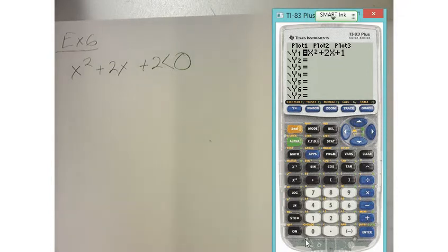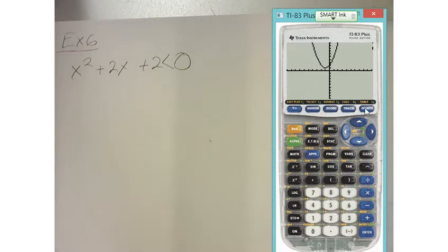And so here is a scenario when we graph this. Uh-oh, SpaghettiOs. What happens? It doesn't cross the x-axis.